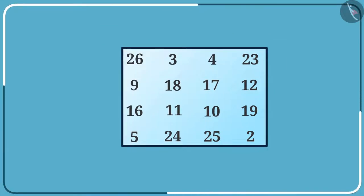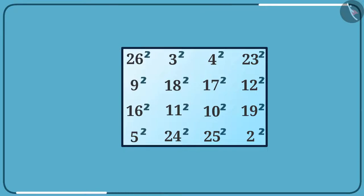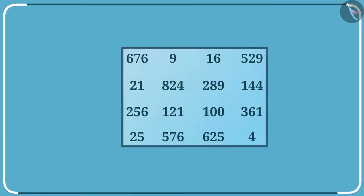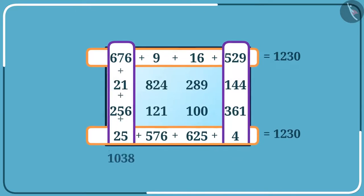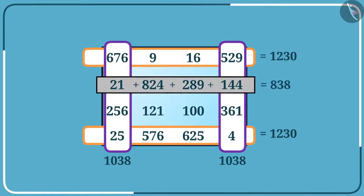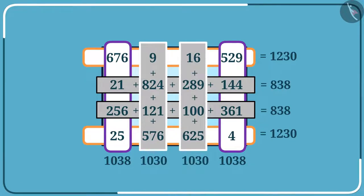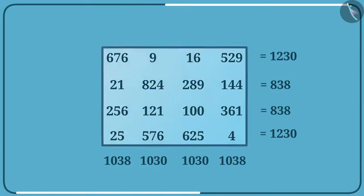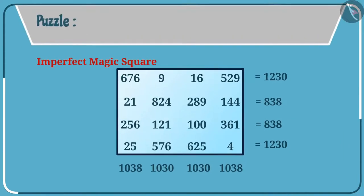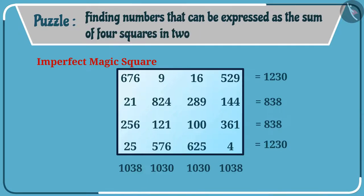Now let me show you one more magic in this square. I will write the square of the number in each cell. In this square, the end row sum and end column sum is equal. Similarly, the second and third row sums and the second and third column sums are also equal. So, this is the imperfect magic square that solves the puzzle of finding numbers that can be expressed as the sum of four squares in two different ways.